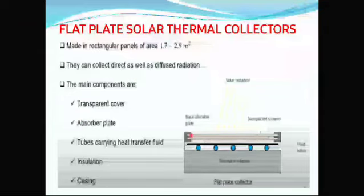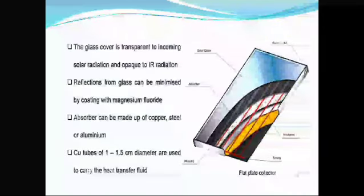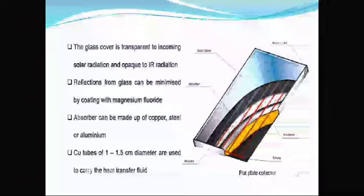The flat plate solar thermal collector is made in rectangular panels. They collect both direct and diffused radiation. The main components are a transparent cover, absorber plate, tubes carrying heat transfer fluid, insulation and casing. The glass cover is transparent to incoming solar radiation and opaque to IR radiation. Reflections from glass can be minimized by coating with magnesium fluoride.